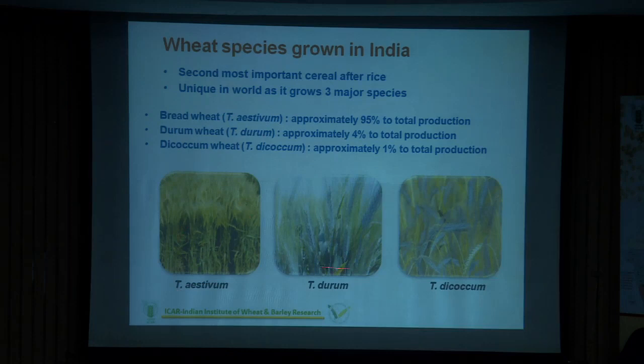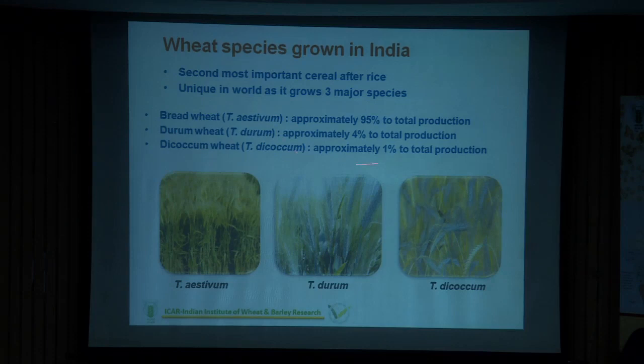Some parts of central India — Rajasthan, Gujarat, and Madhya Pradesh — cultivate durum wheat, which is used for making macaroni and pasta. Dicoccum cultivation is less than 1 percent, found in Karnataka and the southern hills of Tamil Nadu.